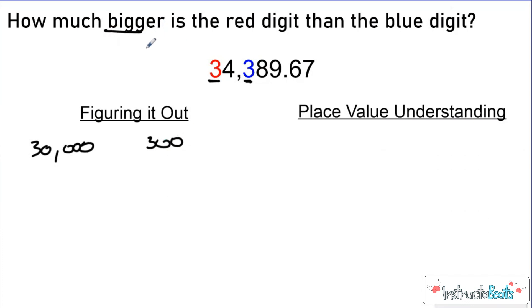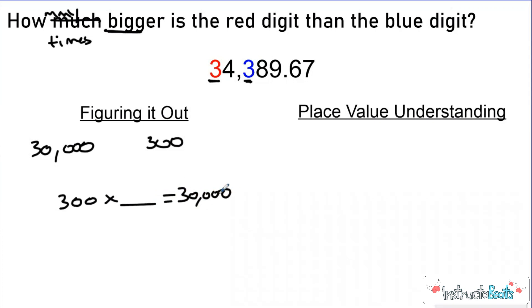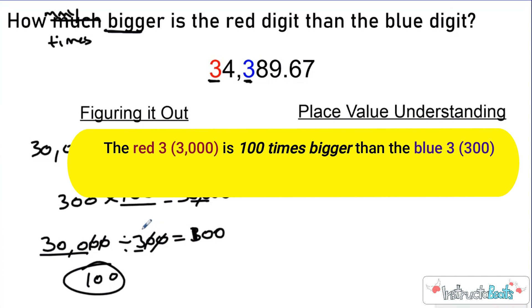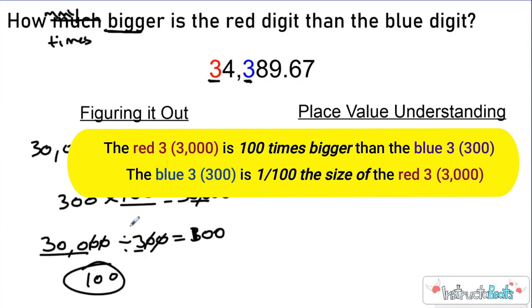So the question is: how many times bigger is the red digit than the blue digit? So 300 times what is going to equal 30,000? You could count your zeros, or you could rewrite this as a division equation — divide, cross out your zeros — and you'd have 30,000 divided by 300, which is 100. Or you could just say, I have two zeros already and I need two more, so I'm going to multiply by 100. The answer is it is 100 times bigger.